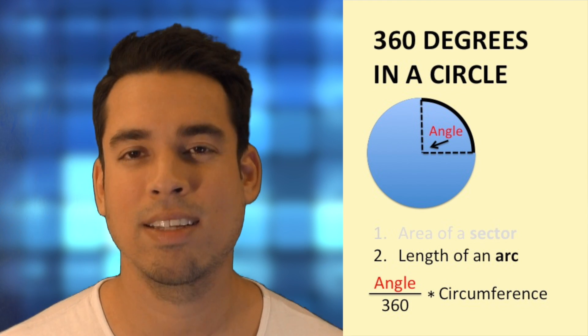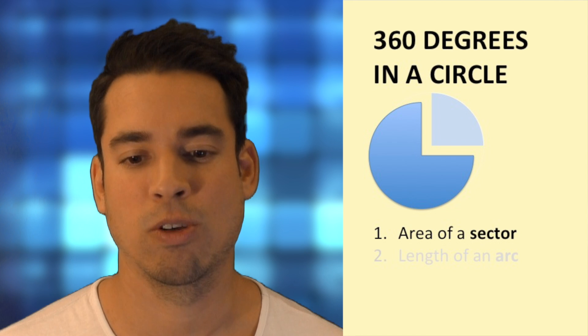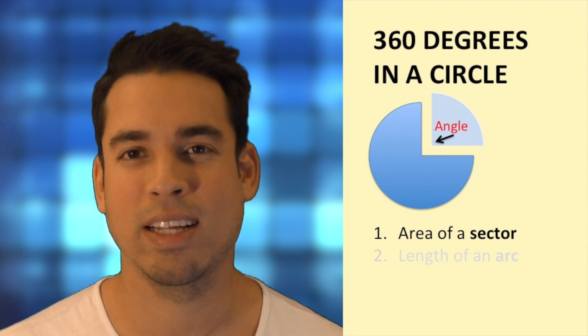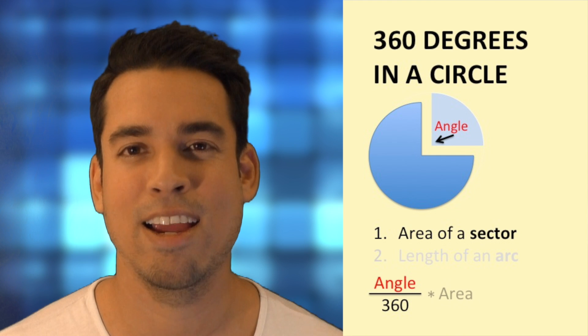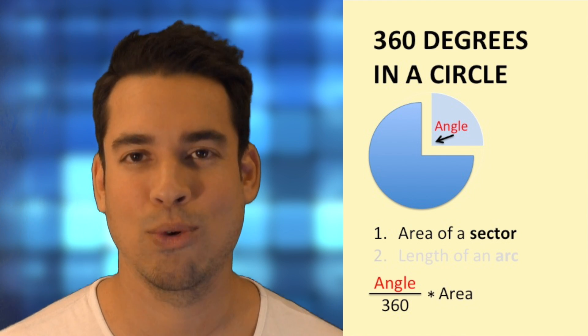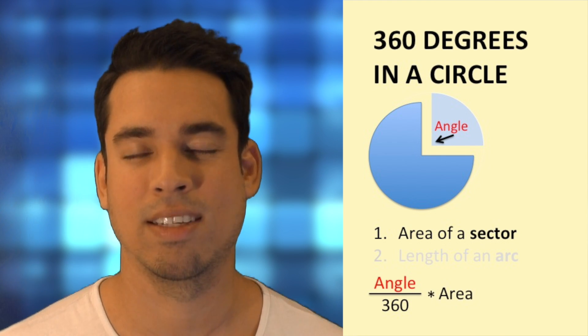Now how do we find the area of a sector? Well it's kind of similar. We're going to take that same angle and divide it by 360, but multiply it instead by the area of the circle, and that will give us the area of this sector.